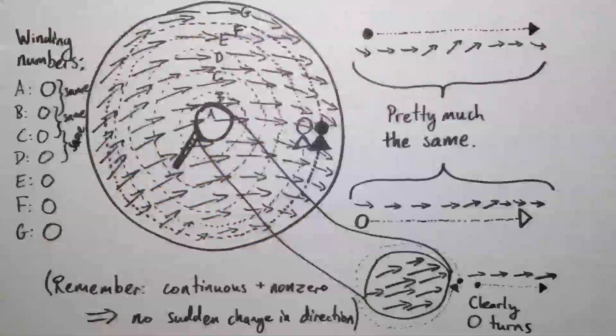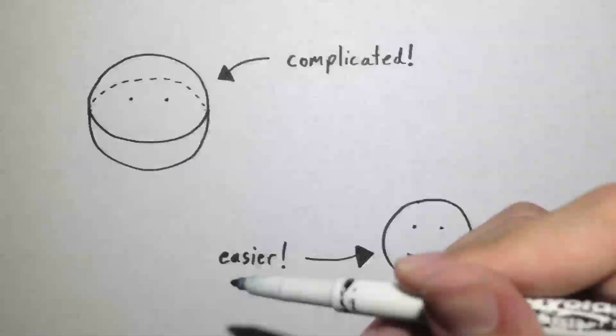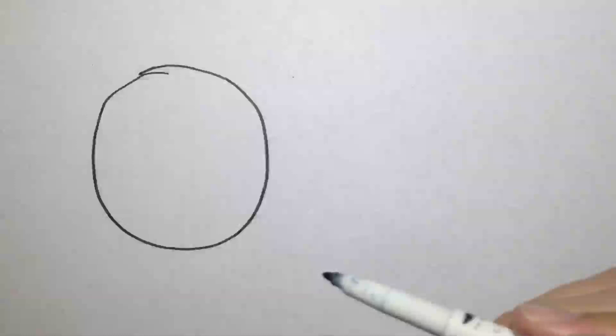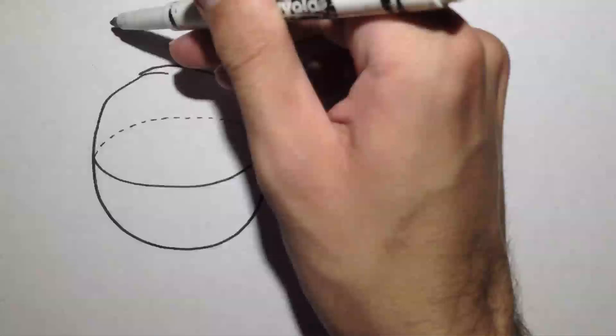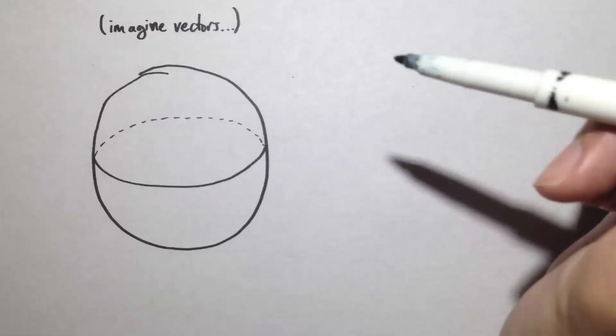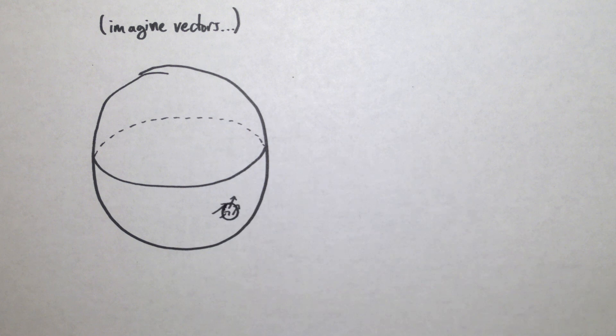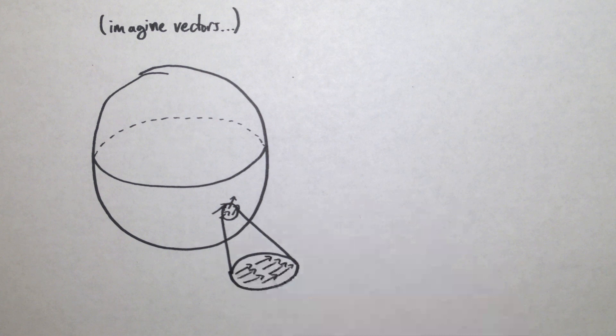Alright, how does this help us conclude anything about a sphere? Let's start by examining a continuous vector field tangent to a sphere that's non-zero in at least one place. We can draw a circle on the sphere in an area where the vectors aren't zero. As before, if we make the circle small enough, all the vectors inside it will point in more or less the same direction.